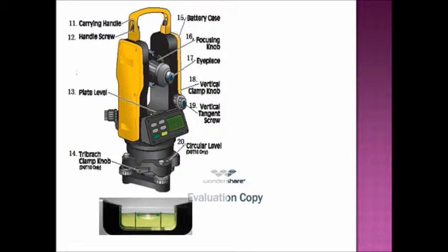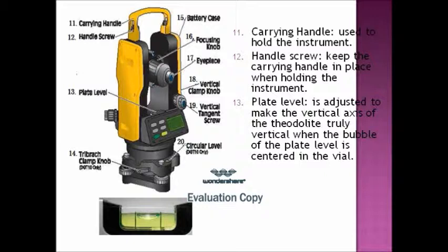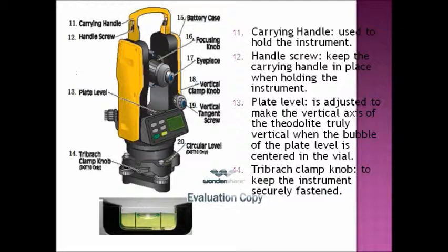On the other side of the theodolite we have the carrying handle. This is used to hold the instrument. The handle screw keeps the carrying handle in place when holding the instrument. We have the plate level. Below is a closer view of the plate level. It is adjusted to make the vertical axis of the theodolite truly vertical when the bubble of the plate level is centered in the vial.